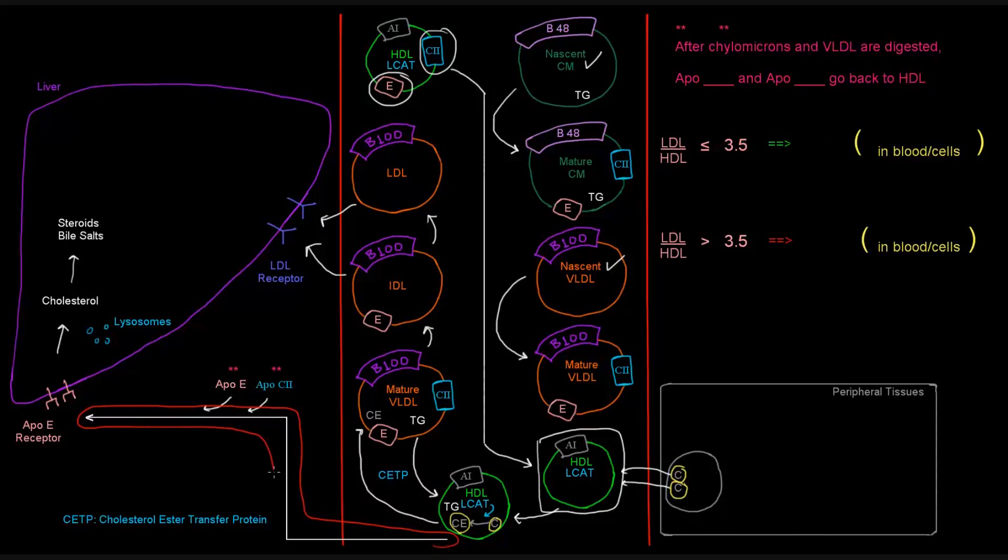And on the way there, APOE and APOC2 will come back onto the HDL particle. And this is because, you see these little asterisks here, after the chylomicrons and VLDLs are digested, the APOC2 and APOE can go back to the HDL. And that's good because we need HDL to be able to be taken up by the liver, and it needs that APOE to bind the APOE receptor so that it can be taken up and these lysosomes can then fuse with the particle and then give us the cholesterol back in the liver here. And, of course, that cholesterol can give us steroids or bile salts or whatever the cells need.